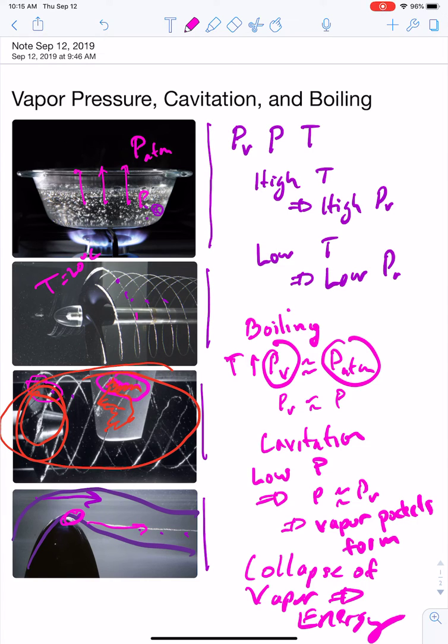And then if this stream of vapor starts hitting, say, this side of the pipe or this side of the pipe somewhere else downstream, it can cause damage there. So cavitation, which is this process of generating these vapor pockets which then can strike the side of a pipe, that's something we want to avoid when we design pipelines, when we design pumps, operate pumps.